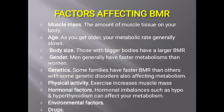The next factor is age. As you get older, your metabolic rate generally slows due to loss of muscle tissue and changes to hormonal and neurological processes. During development, children grow through periods of rapid growth with extreme rates of metabolism. Next, body size: those with bigger bodies have a larger BMR because they have larger organs and fluid volume to maintain. Gender: men generally have a faster metabolism.